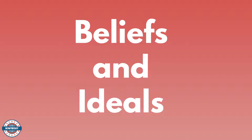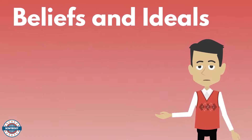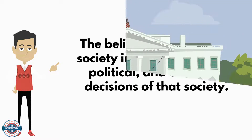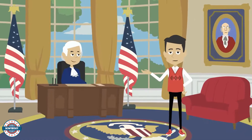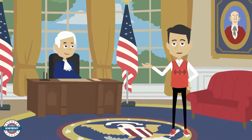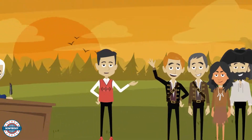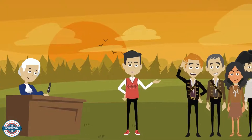Beliefs and ideals is a connecting theme you will find throughout the context of social studies. The beliefs and ideals of a society influence the social, political, and economic decisions of that particular society. The presidency of Thomas Jefferson is a great example — when Jefferson purchased the Louisiana Territory from France, the social, political, and economic decisions were based on manifest destiny: the belief that the United States should stretch from the Atlantic Ocean to the Pacific Ocean.